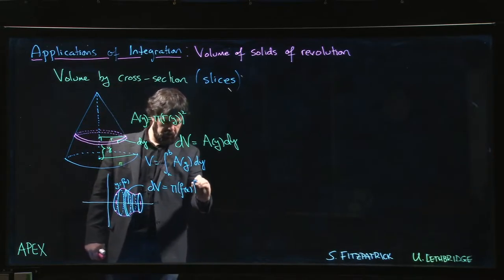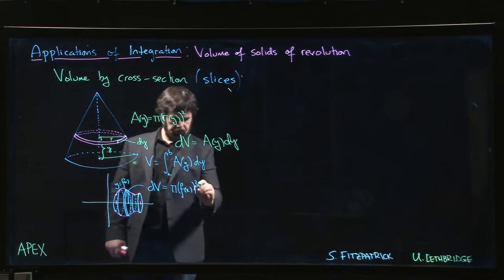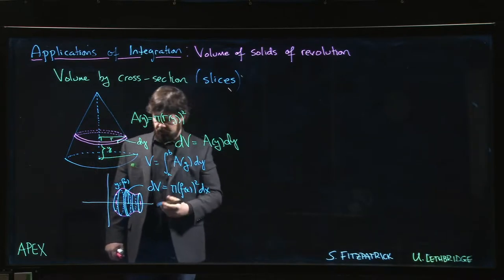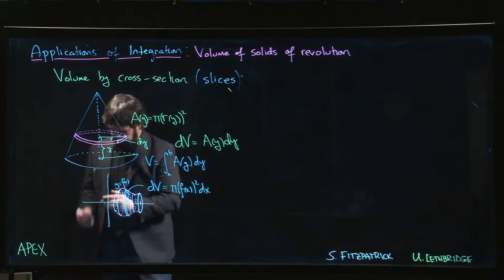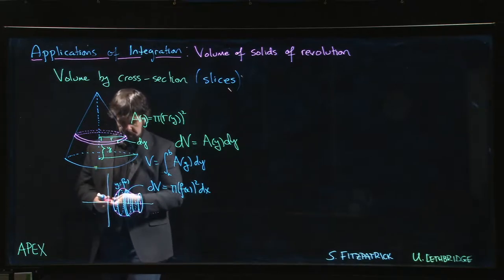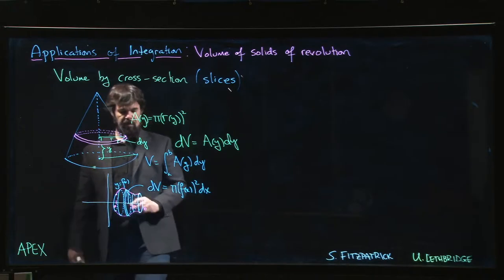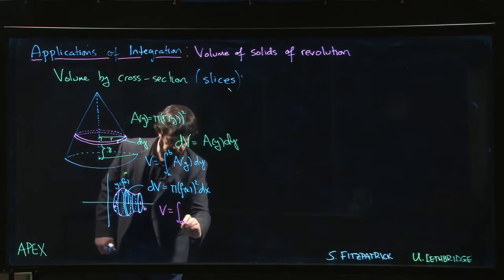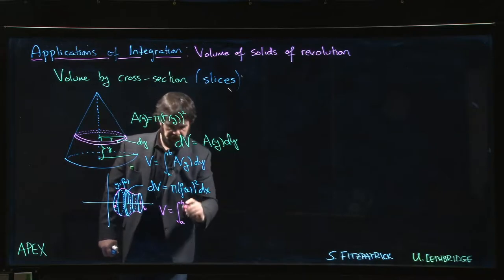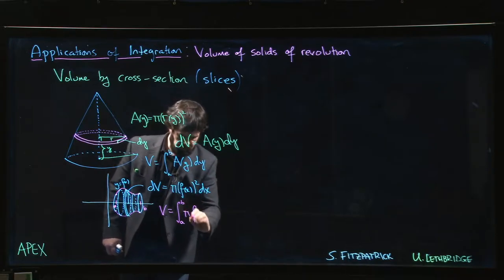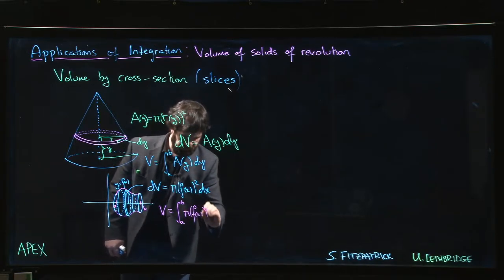If we started at some initial value a and we ended at some final value b, then it seems reasonable that the volume for this thing should be the integral from a to b of π[f(x)]² dx.